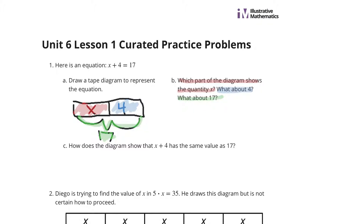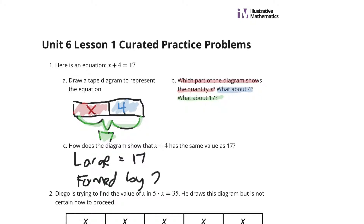How does the diagram show that x plus 4 has the same value as 17? Well, basically the large rectangle has that 17, but then it's formed by two smaller rectangles that have the x plus the 4.